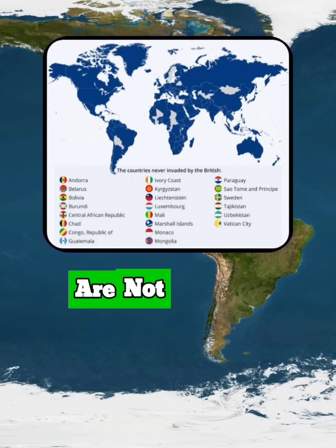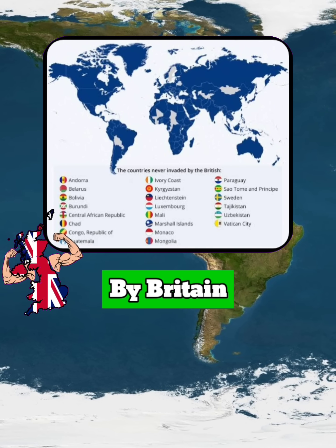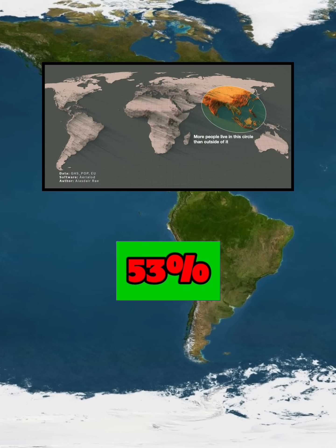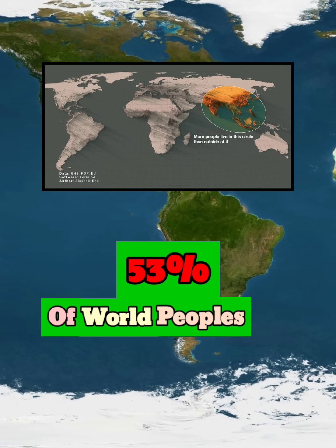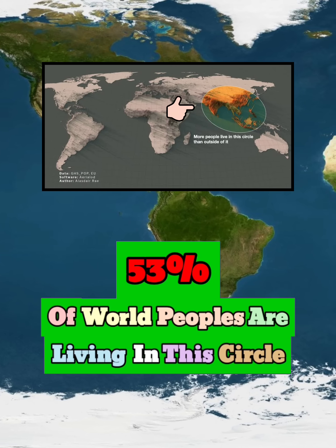Only these 22 countries were not invaded by Britain. 53% of the world's people are living in this circle.